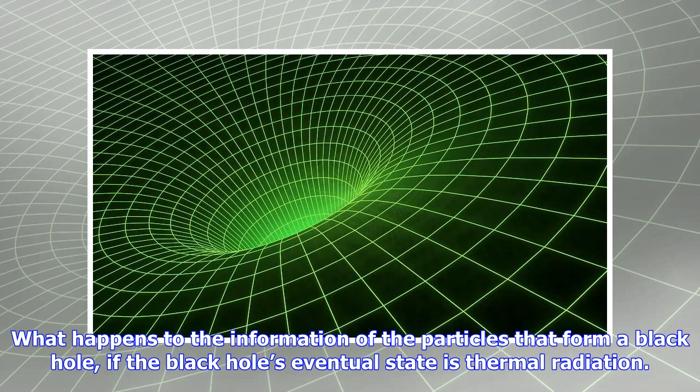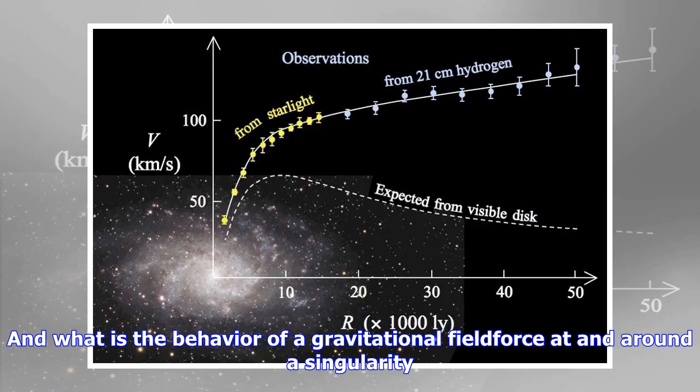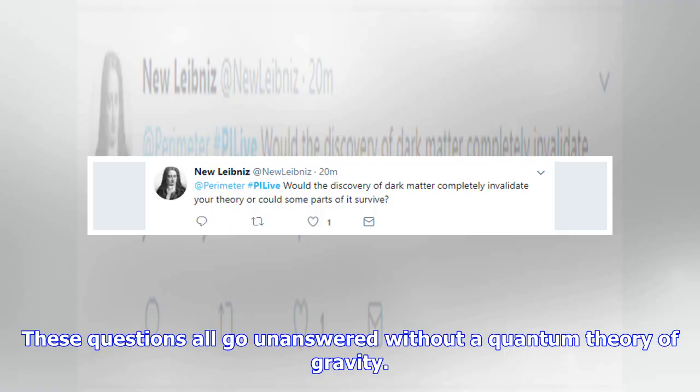There are a few strong field situations where we simply cannot obtain sensible answers using our current theories. What happens to the gravitational field of an electron when it passes through a double slit? What happens to the information of the particles that form a black hole if the black hole's eventual state is thermal radiation? These questions all go unanswered without a quantum theory of gravity.